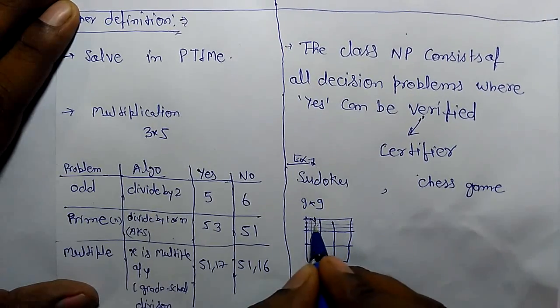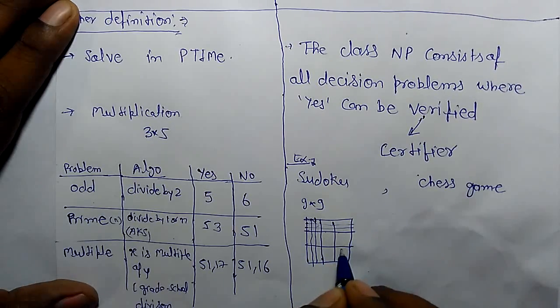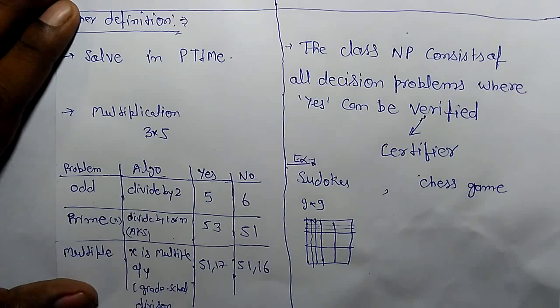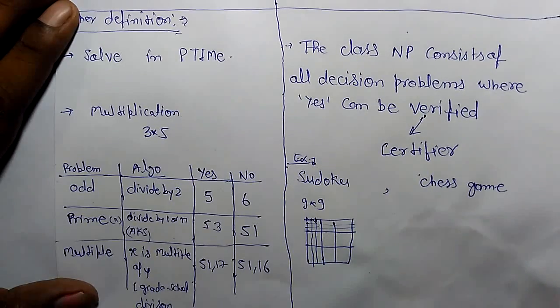In this square, all squares will be filled. 9 cells will be in each square. Solving a SUDOKU is a very tough task, but verifying a solved SUDOKU is easy. So that is a certifier.